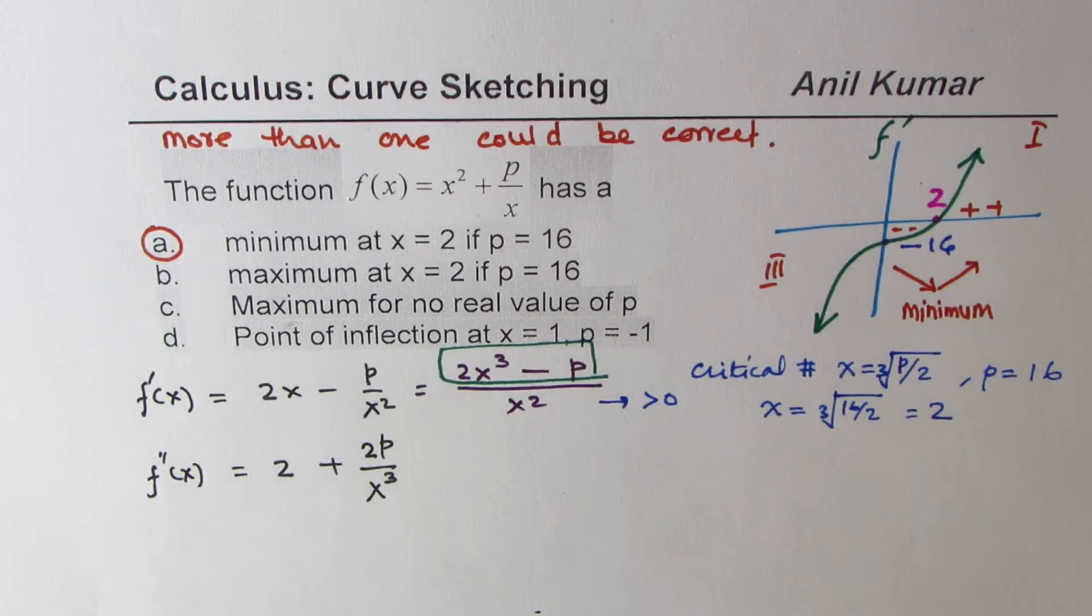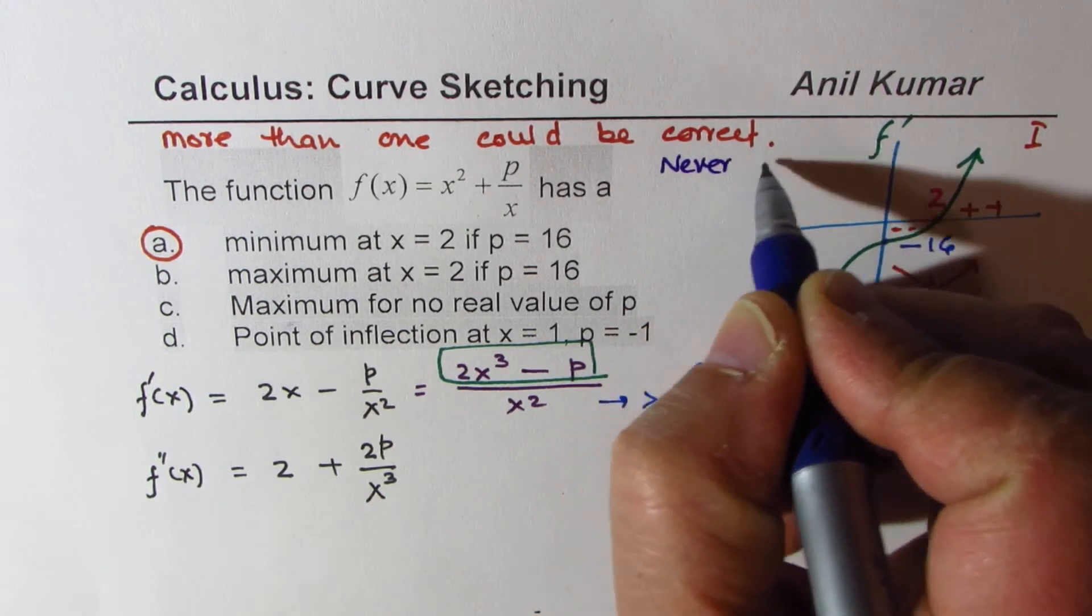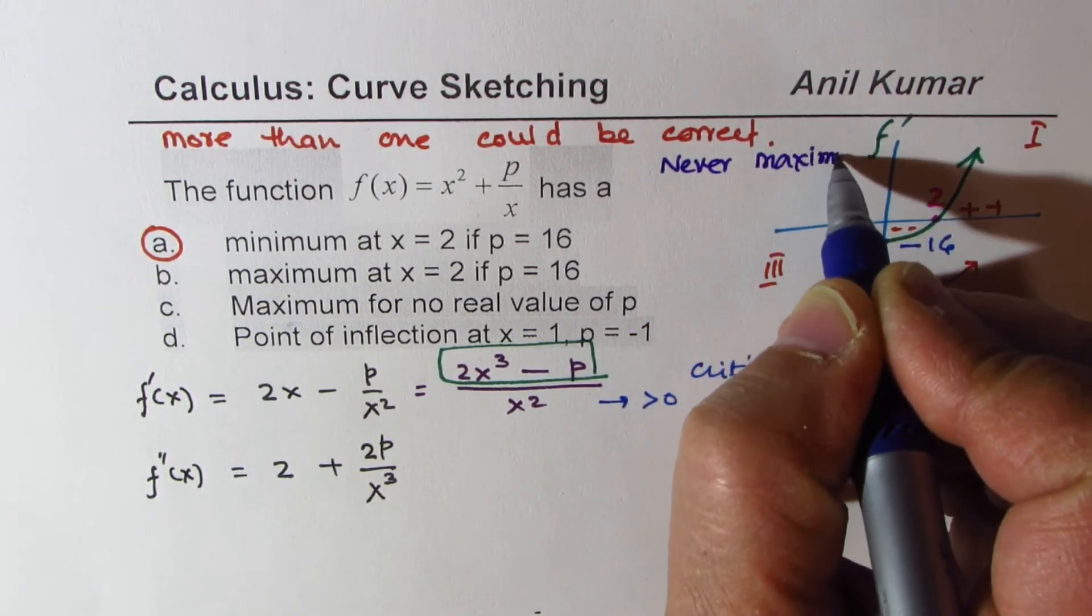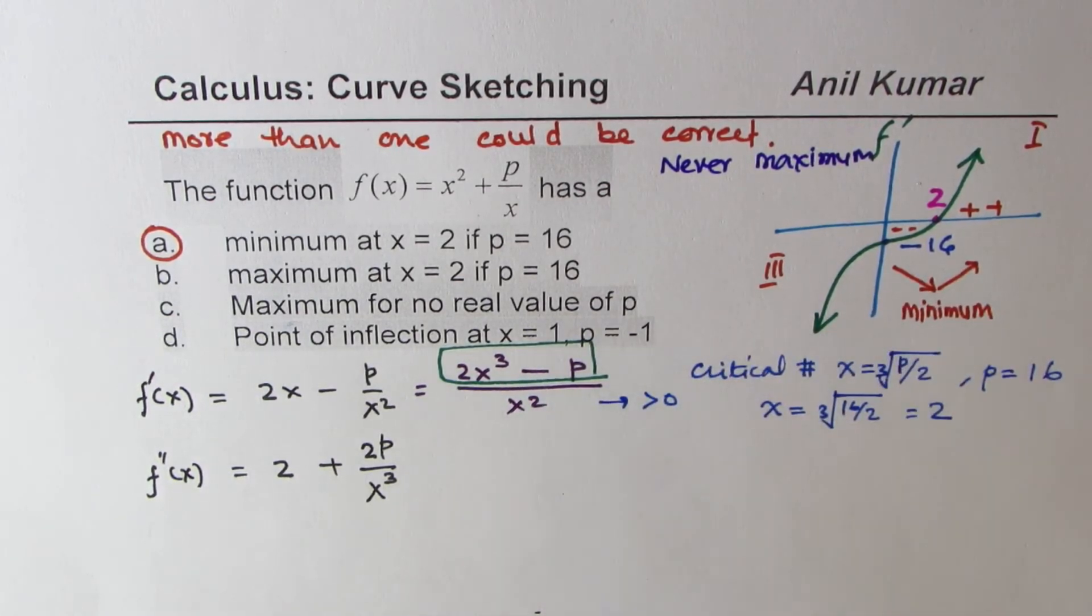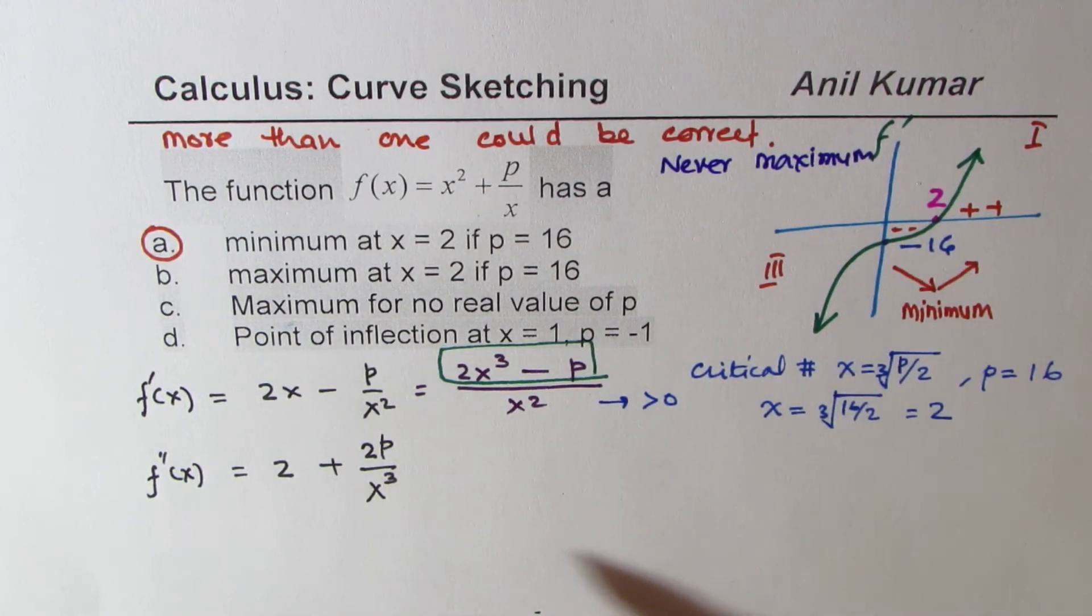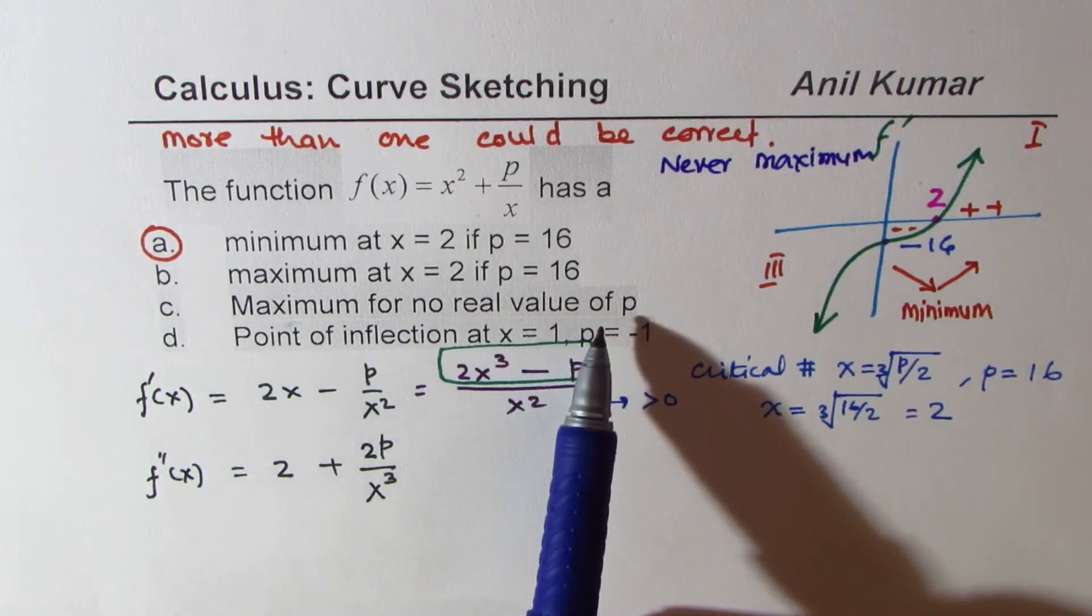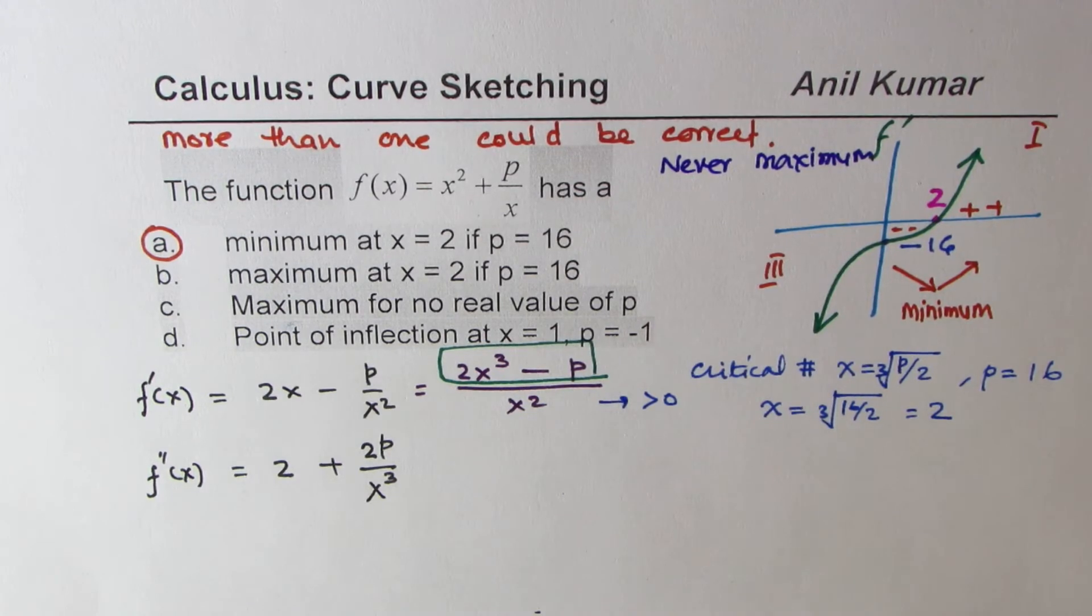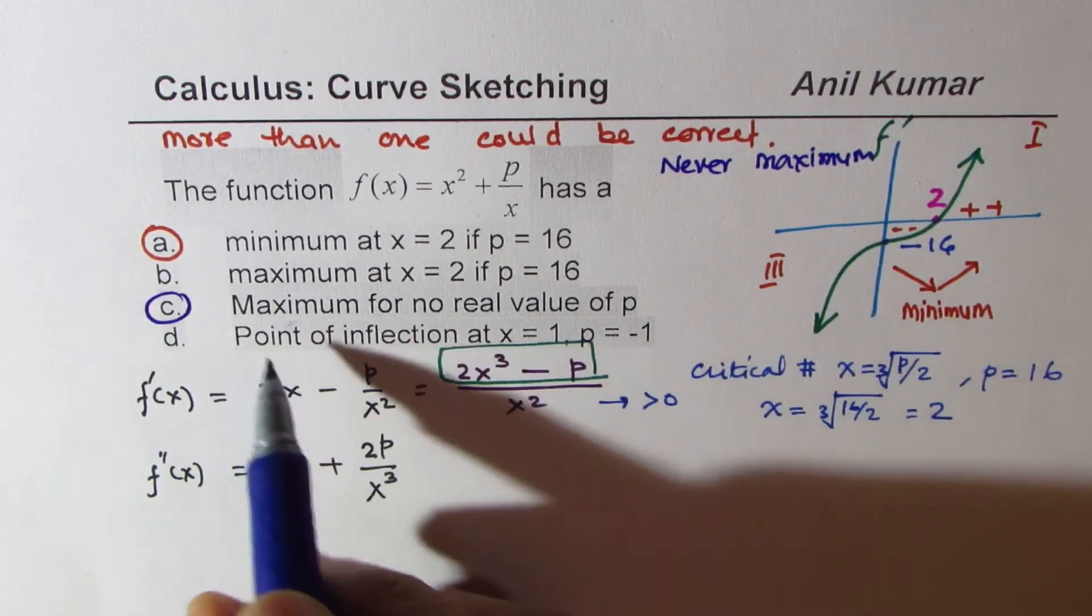So we'll never have maximum, right? So clearly, we'll never have maximum in this case. Perfect. Whatever the value of p may be. Right? So maximum for no real values of p. So that is true. We'll never have maximum, right? For either. So that is also correct, right? It is never maximum.